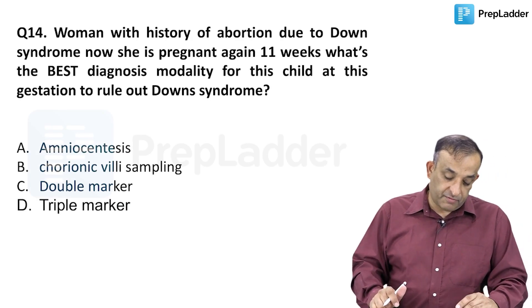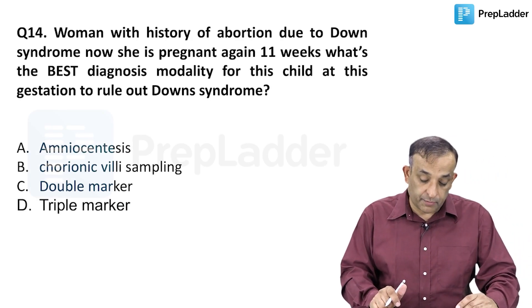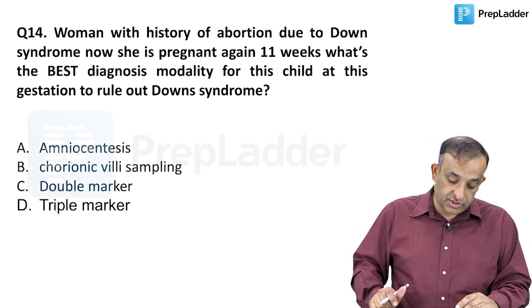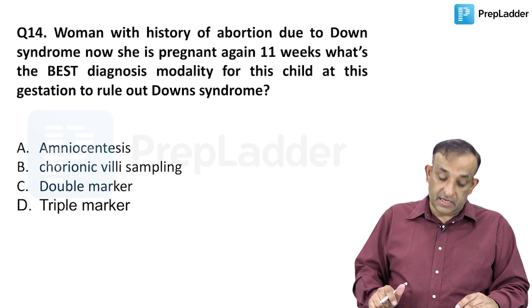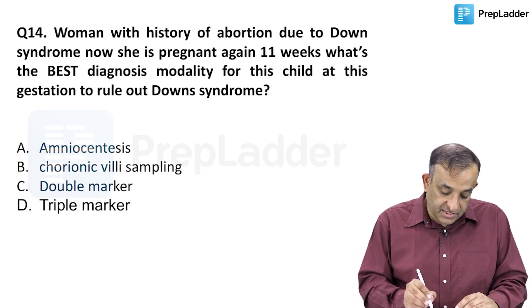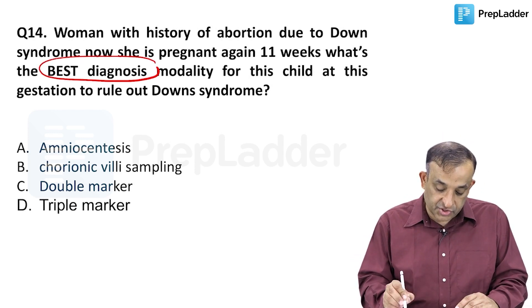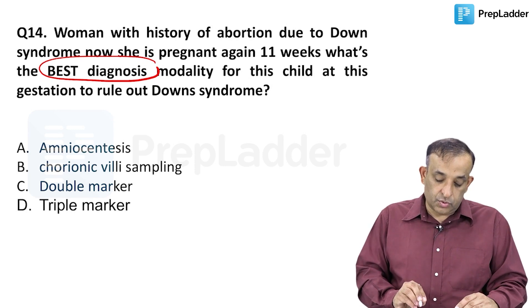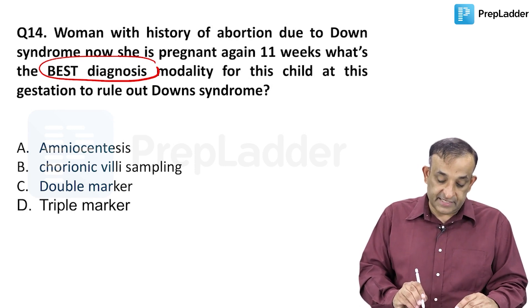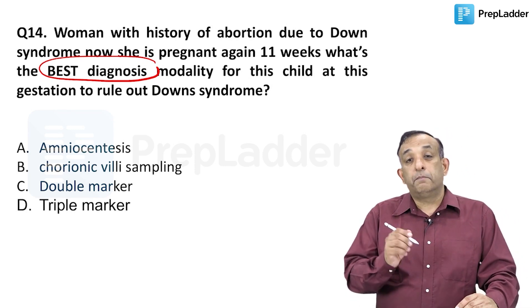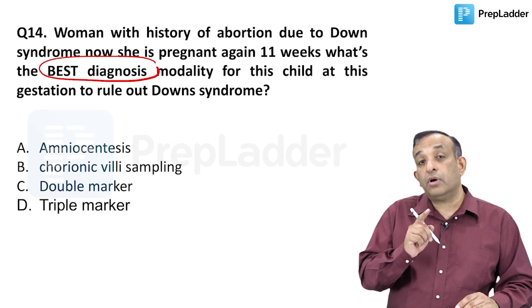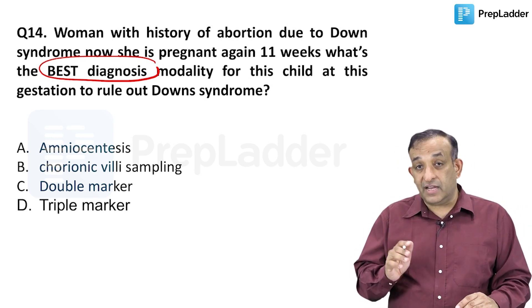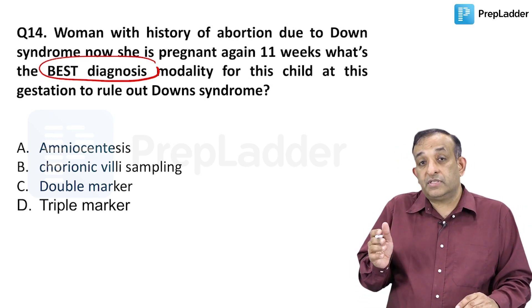Question number 14: A woman with a history of abortion due to Down syndrome is now pregnant again and has come to you at 11 weeks of gestation. The best diagnostic modality to rule out Down syndrome at this gestation — now at 11 weeks with a previous Down syndrome history — I am NOT going to do a screening. Be very careful: when do we do screening versus diagnosis?